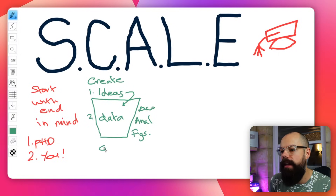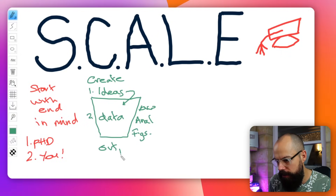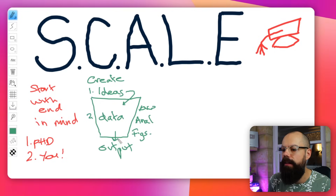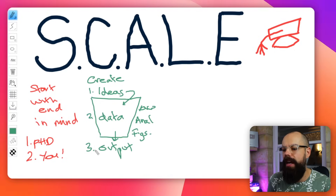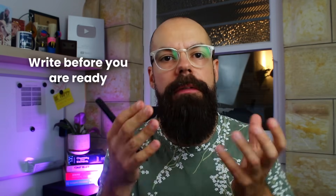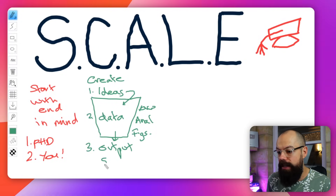A PhD relies on creating, creating, creating. The third level is creating outputs. An output is a research story — it has an idea, it has data, and it has a conclusion. You need to be creating these throughout your PhD. If you're not creating, you're not PhD-ing.